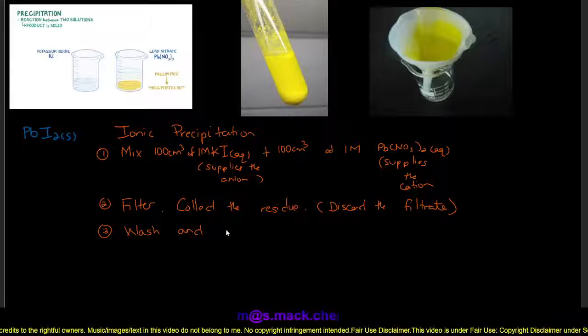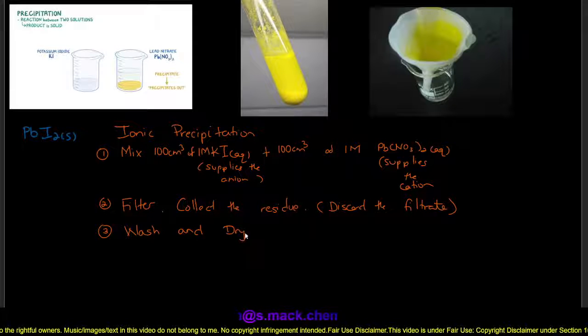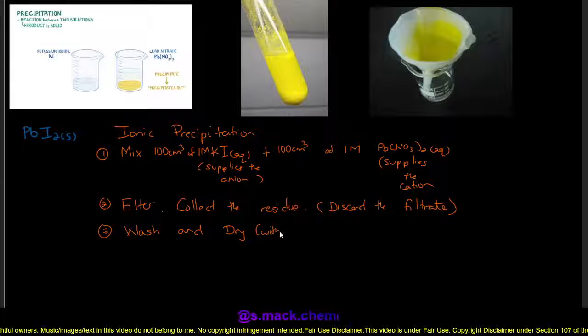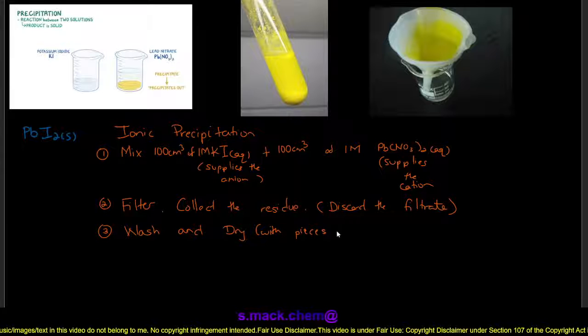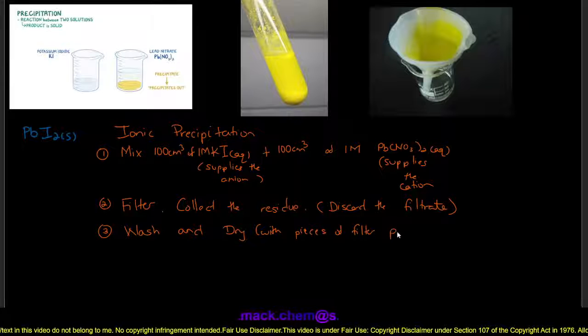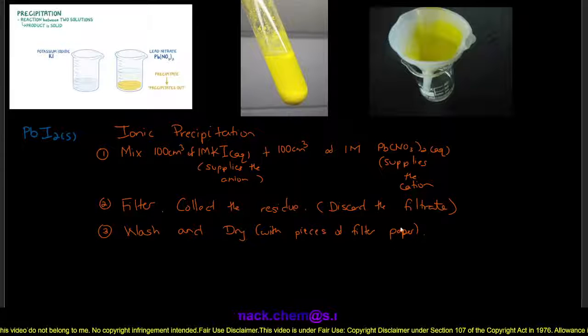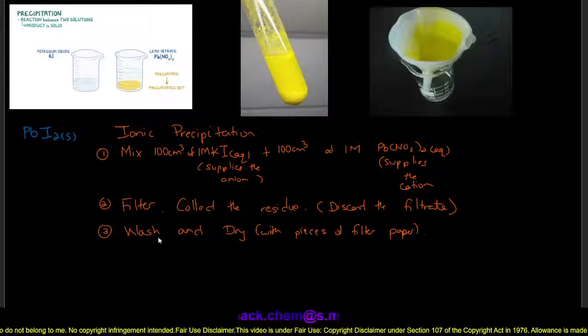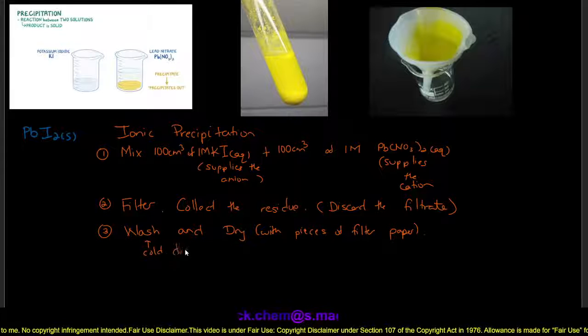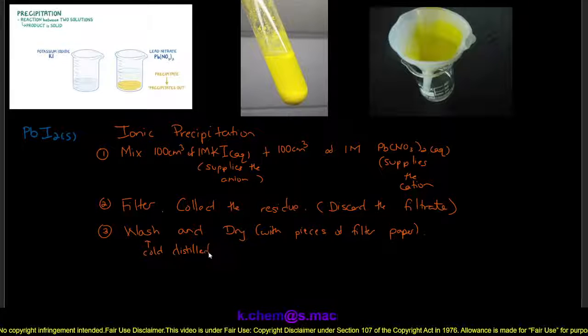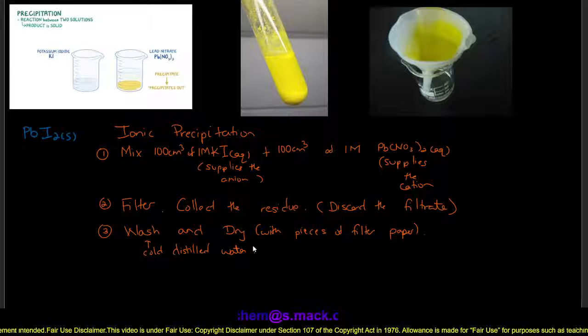And we can dry with pieces of filter paper, or you can even leave it to dry. But that is air dry. So we can wash with a minimal amount of cold distilled water, and dry between pieces of filter paper. And this is our very short, simple method for preparing lead iodide.